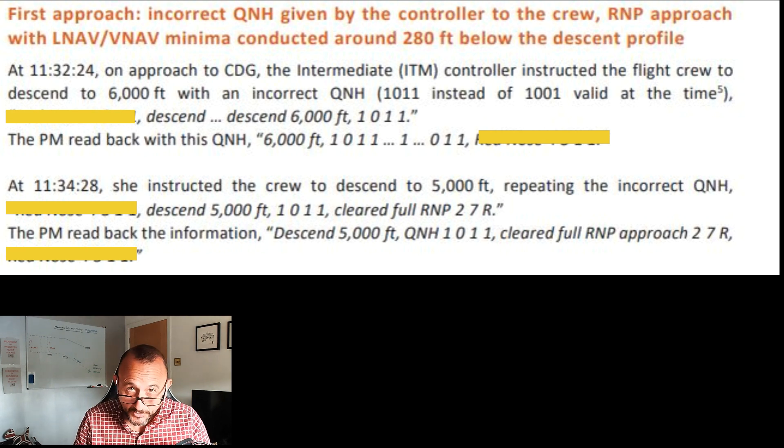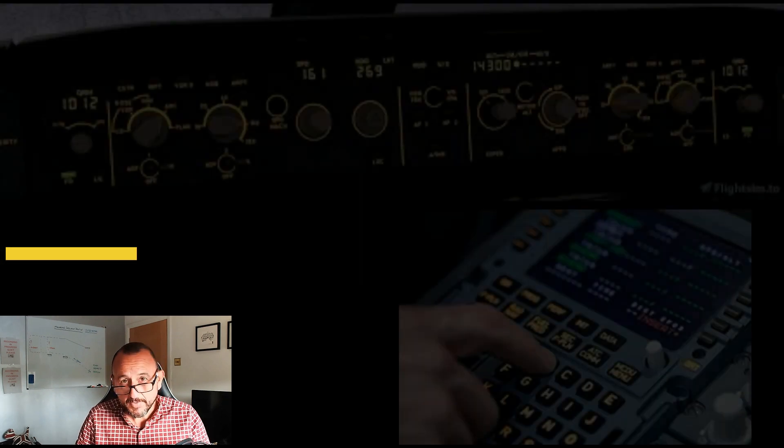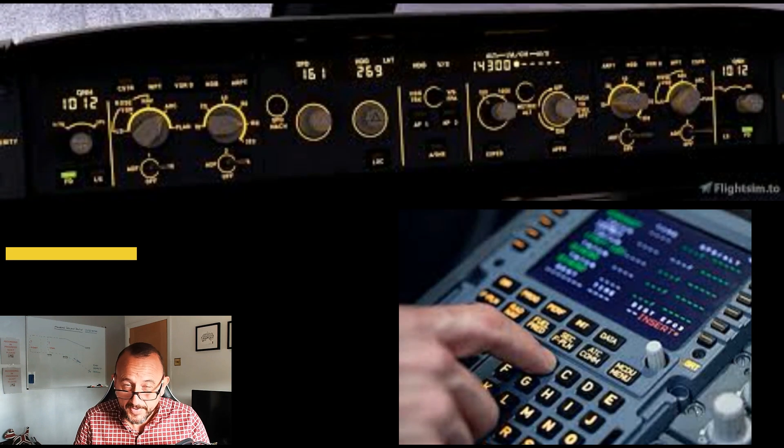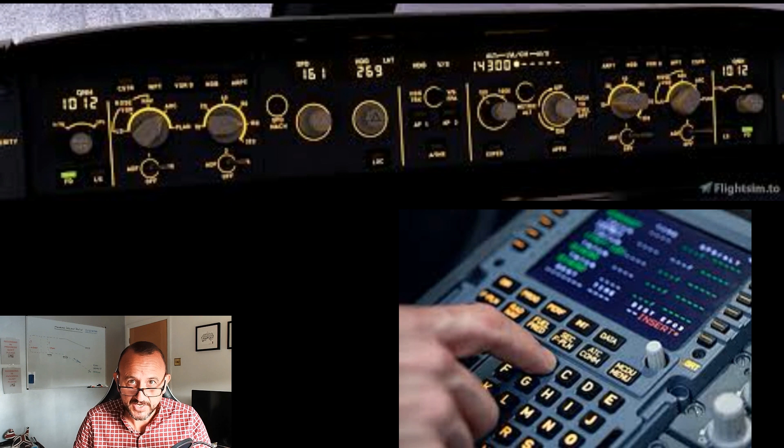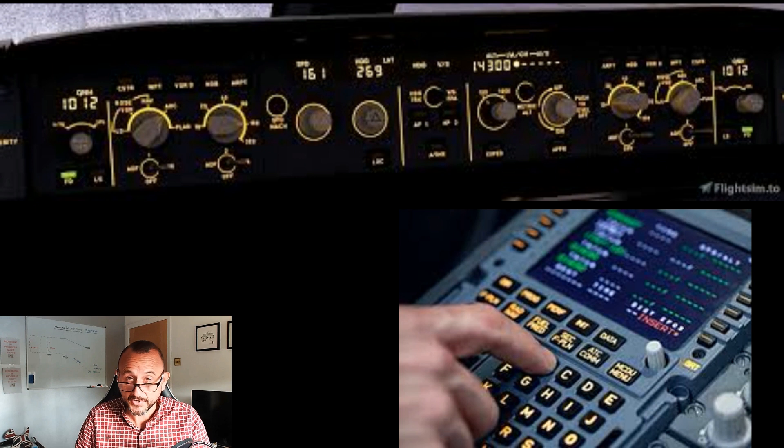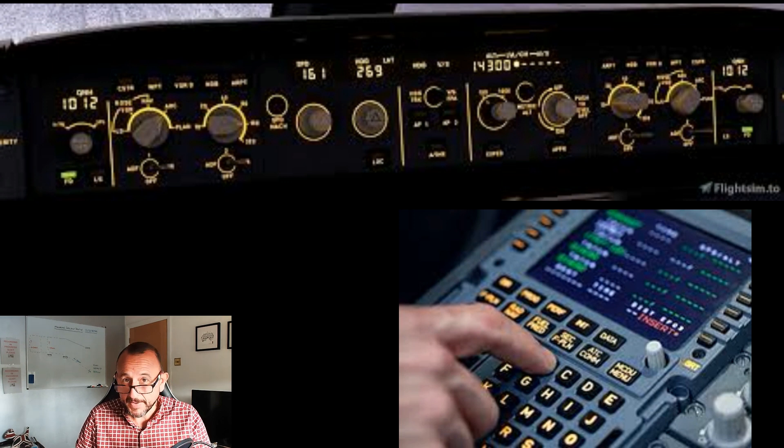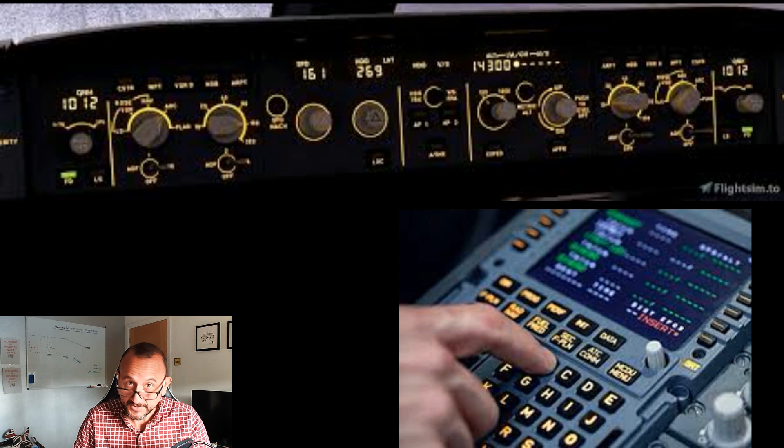Why is it important for the correct baro setting? Well remember, for an RNP approach the aircraft is flown - or the approach is flown - from the aircraft's perspective. There is no ground aids like an ILS, for example, for the aircraft to grab onto and then fly the correct trajectory. The trajectory is set by what's in the FMGC and the baro reference. The aircraft will fly an altitude to that barometric reference.